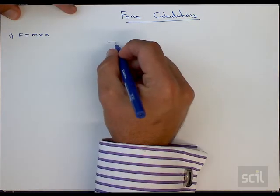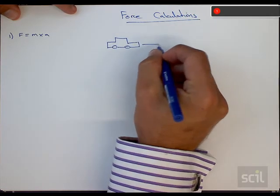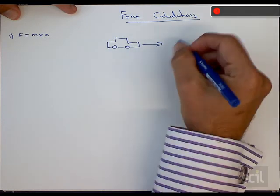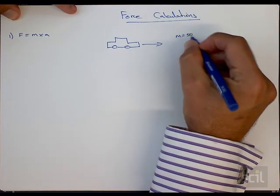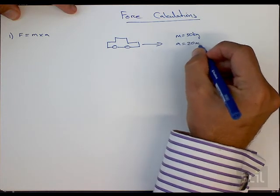This force calculation is used a lot in engineering studies. For instance, excuse my drawing, but if you've got a car traveling in one direction, it has a mass say for instance of 50 kilograms and has an acceleration of let's say 20 meters per second.